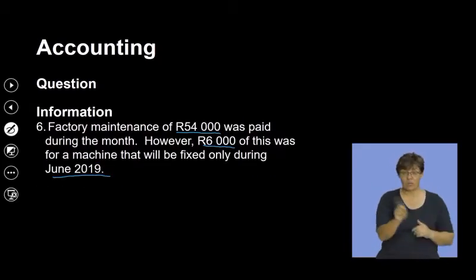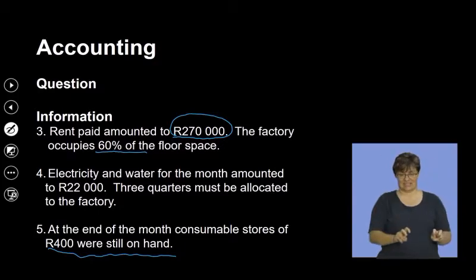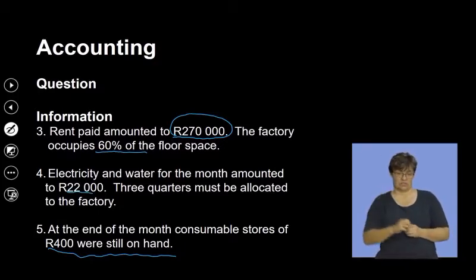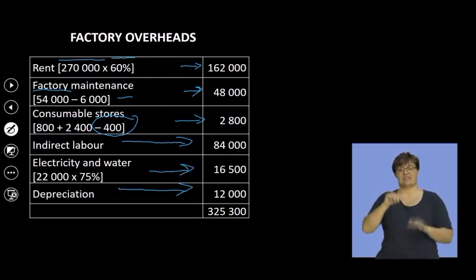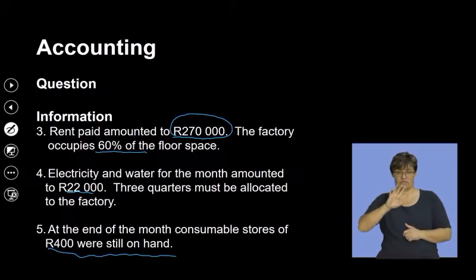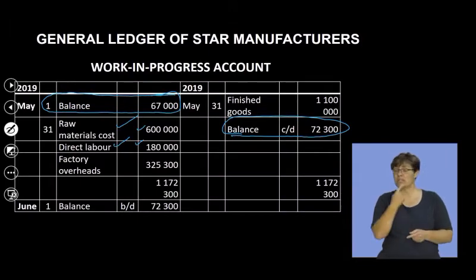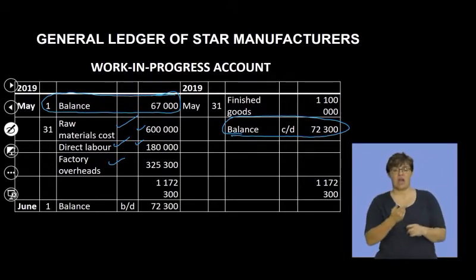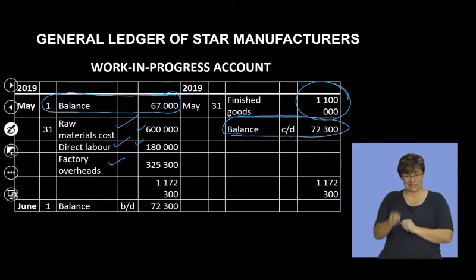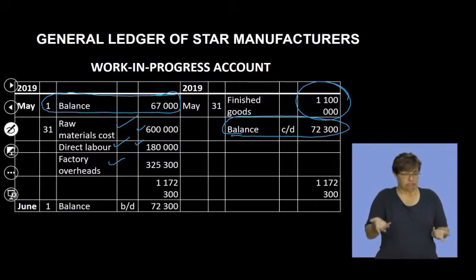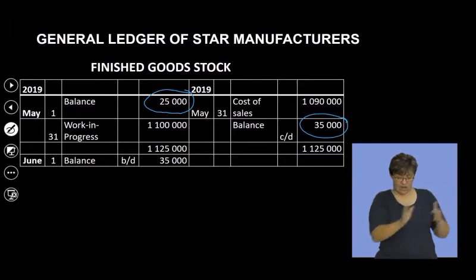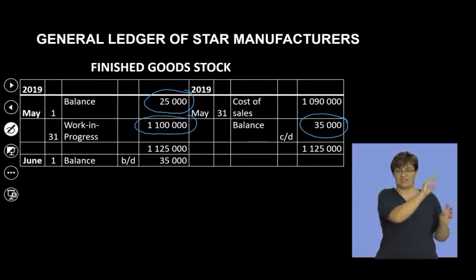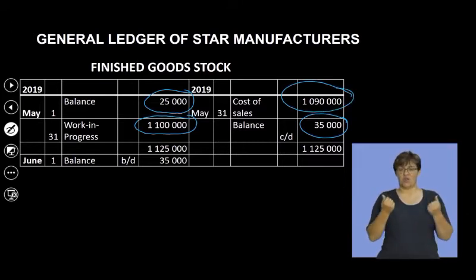Electricity for the month amounted to 22,000 rand, and three quarters must be allocated to the factory. Therefore 75% of 22,000 gives you 16,500. Coming back to the work in process account: opening balance, raw material costs, direct labor, and factory overhead costs are brought in. With the closing balance also given, the finished goods figure becomes the missing or balancing figure. That figure is then taken into the finished goods stock account.